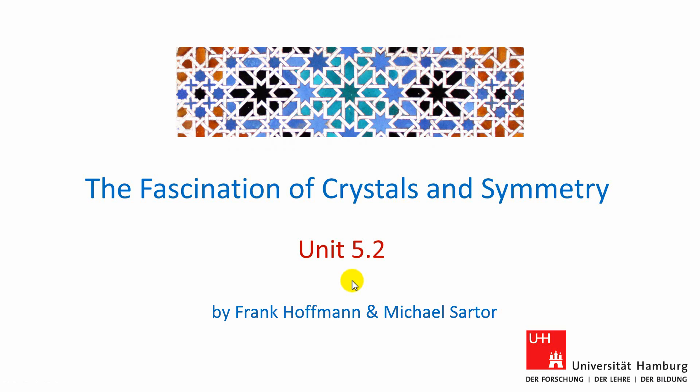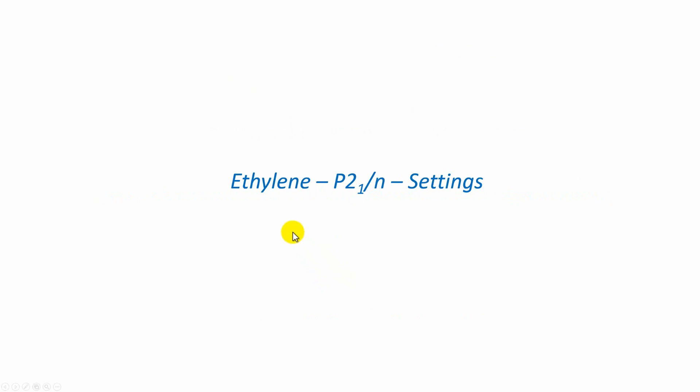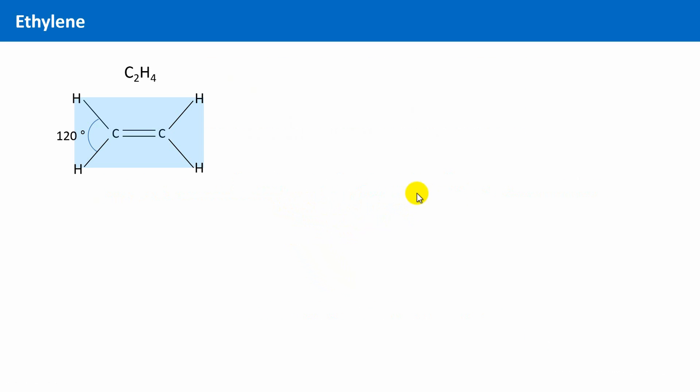Welcome to unit 5.2. In this unit we will explore the crystal structure of ethylene, in addition thereby getting to know the non-standard space group P21/n, which is another setting of the space group P21/c. Ethylene with the chemical formula C2H4 belongs to the unsaturated hydrocarbon compounds due to the double bond between the two carbon atoms.